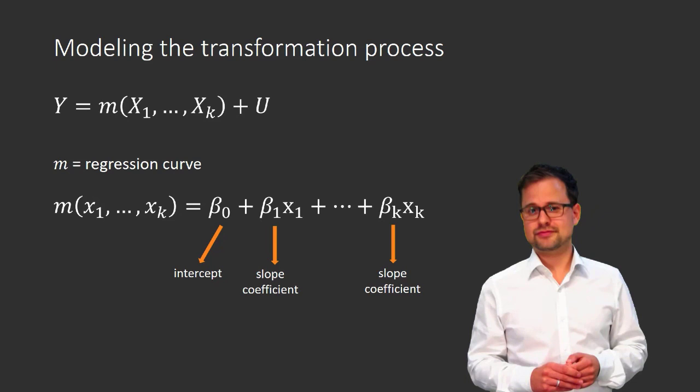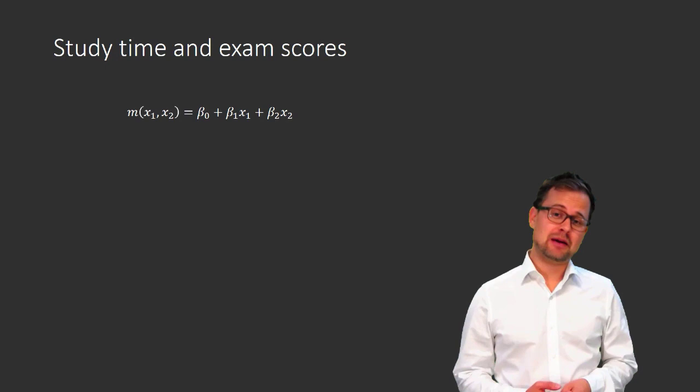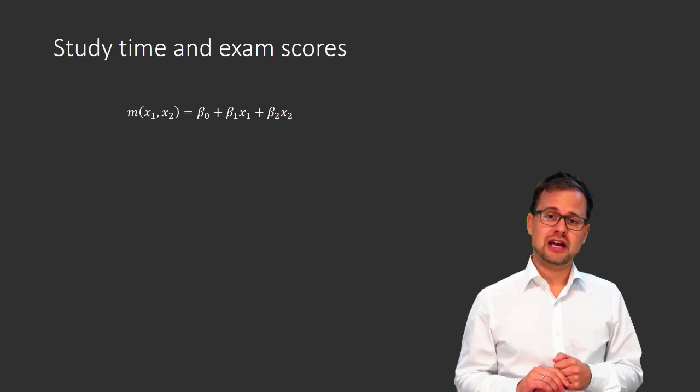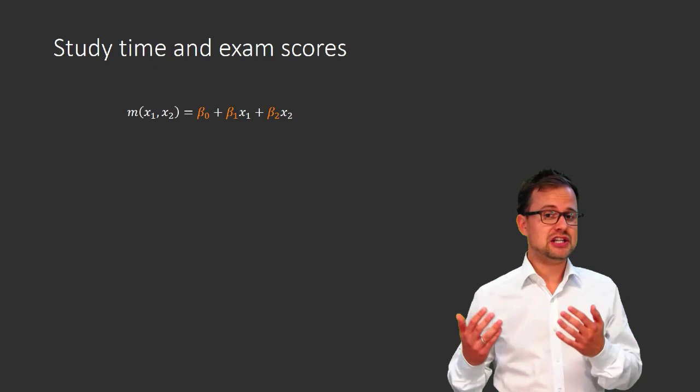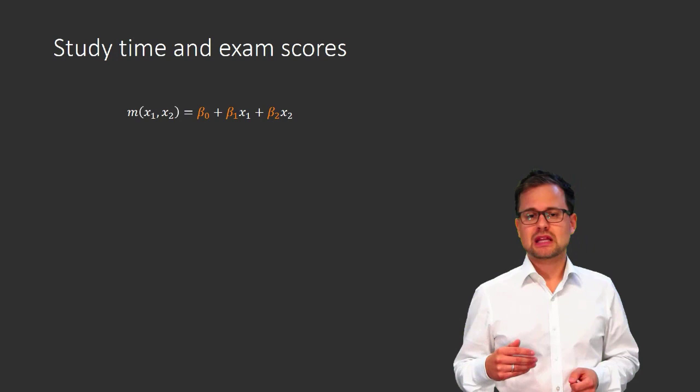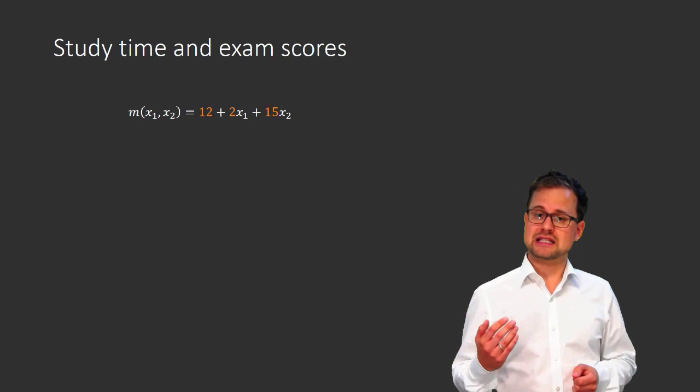Let's consider our study time example again. There are two regressors — study time and the number of statistics courses — so there are two x's in the regression curve and three coefficients: the intercept beta-naught and slope coefficients beta-1 and beta-2. In real life we wouldn't know their numerical values, but for this example let's pretend we do: beta-naught equals 12, beta-1 equals 2, and beta-2 equals 15.